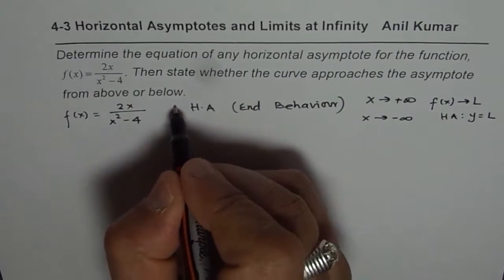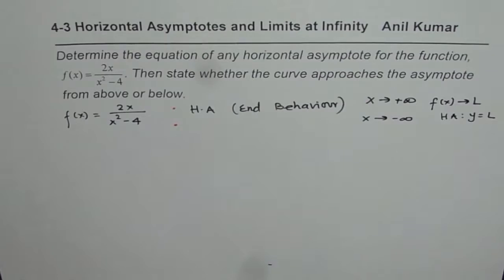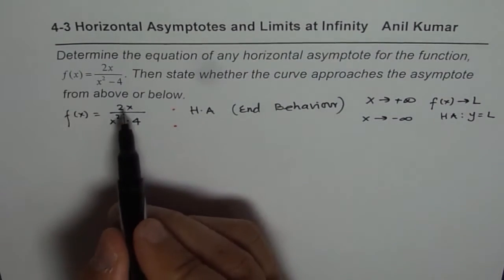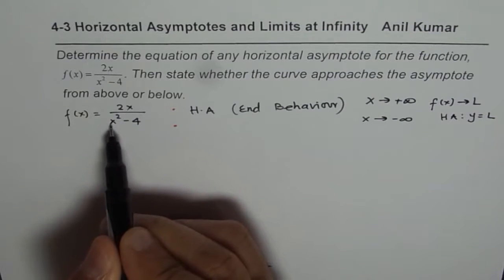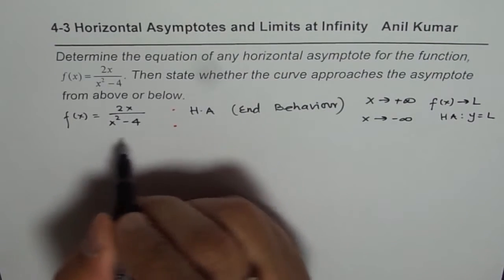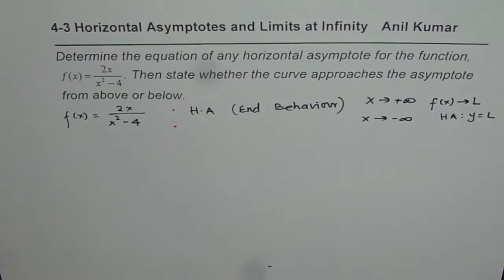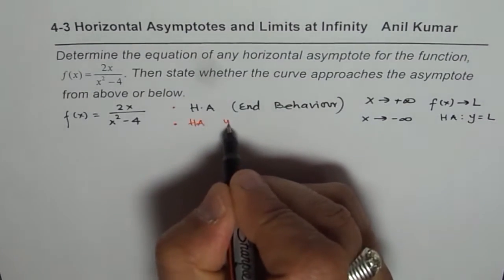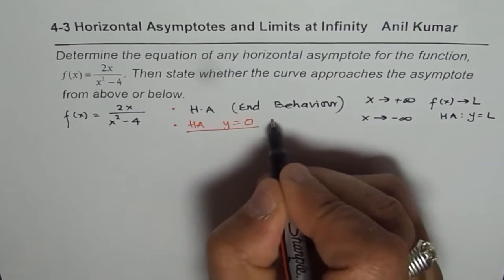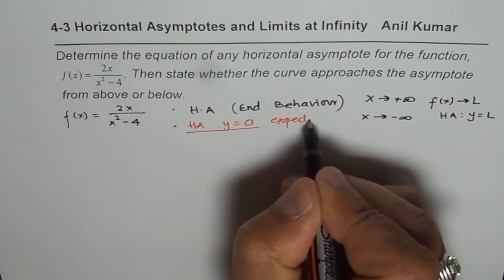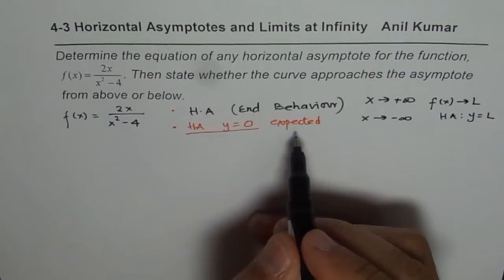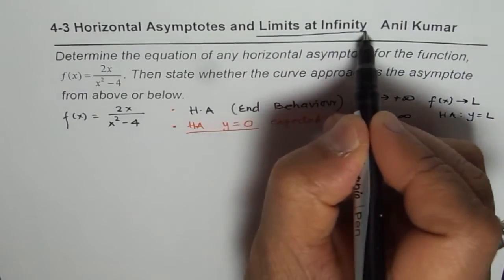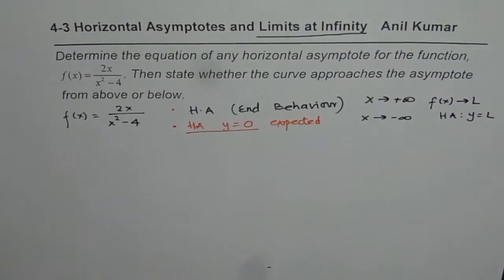Another thing we know is that if we analyze the degree of numerator and denominator — in this case the degree of the denominator is higher — then we expect the horizontal asymptote to be y = 0. That is the expected answer. Now, how to really get this answer is what we are going to do in this video, using the concept of limits at infinity. That is how these two things are related.